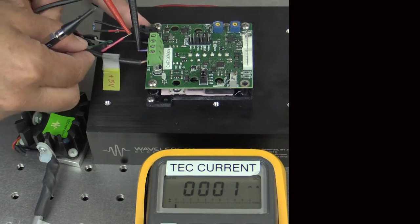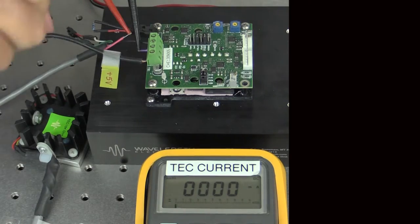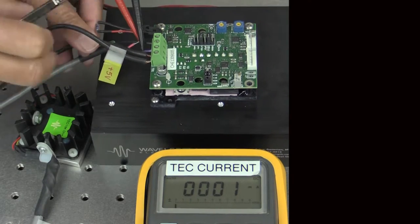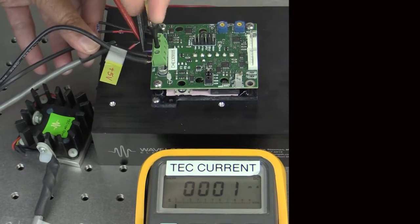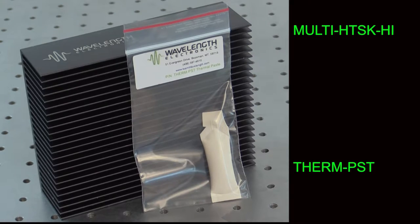For our example, we will operate at 5 volts. Connect the power supply to V plus and ground on terminal strip TB1. Make sure the module is attached to a heat sink using thermal paste and airflow across the fins. The multi-heat sink high and thermal paste accessories are available to simplify setup.